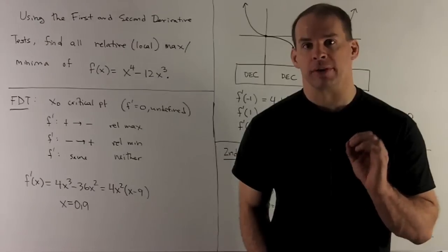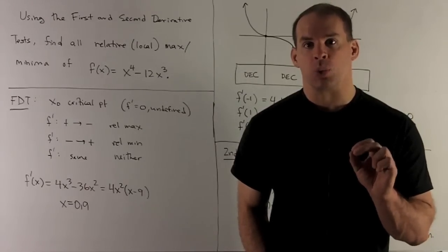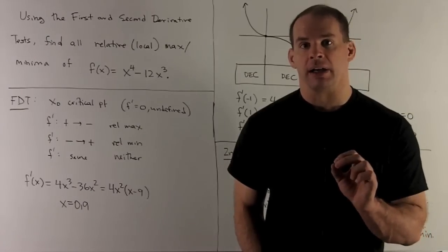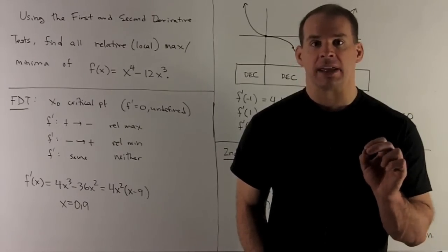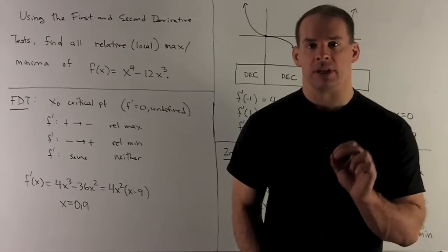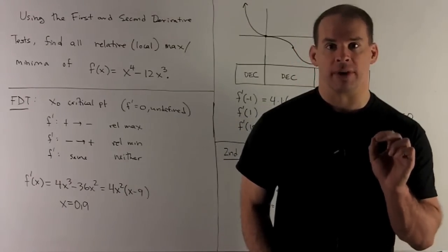So what's our first derivative test tell us? We're going to have a critical point at x0, so that's where f prime is either 0 or undefined. We're going to check the change in sign as we go from one side of x0 to the other. If it goes from positive to negative, our first derivative, then we're going to have a relative maximum.